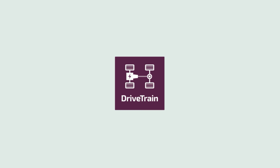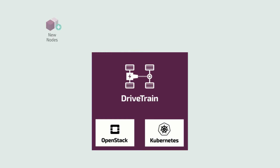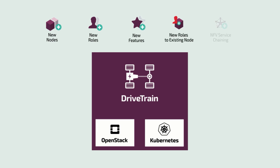With Drivetrain, we can define idempotent configurations for both OpenStack and Kubernetes environments and make changes to specific code to adapt your environment, like adding new nodes with new roles and new features, adding new roles to existing nodes, or NFV service chaining for maximizing QoS and security.